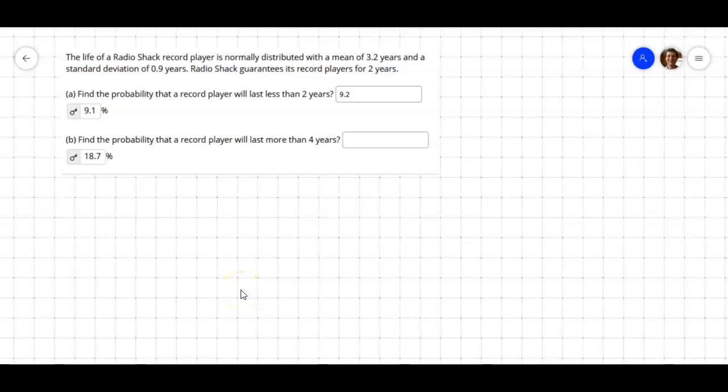Let's take a look at normal probability, normal distribution. The life of a Radio Shack player is normally distributed with a mean of 3.2. So let's write the mean down. Mean is 3.2. Standard deviation is 0.9.